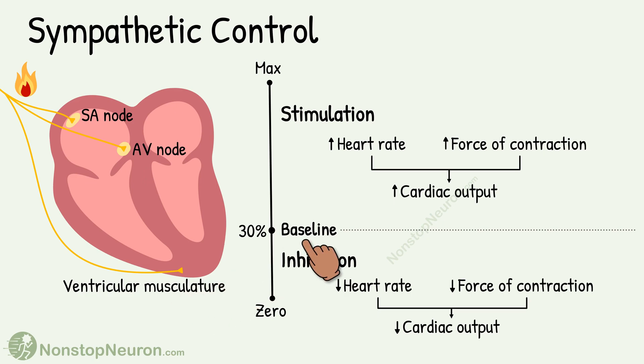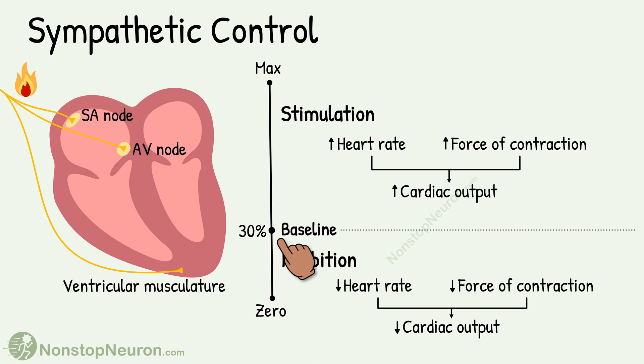The first thing you need to understand regarding control by the sympathetic nervous system is that sympathetic nerves are not completely inactive under resting conditions. If sympathetic activity can range from a low point to a high point, under resting conditions it is active at a baseline level. This activity maintains the pumping of the heart about 30% above that without any sympathetic activity.